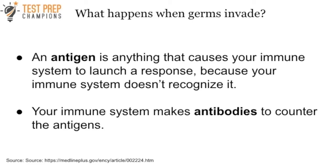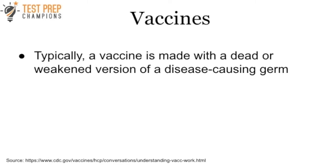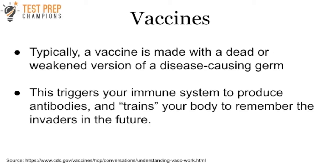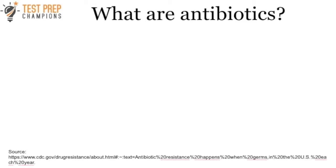Your immune system makes antibodies to counter these antigens, so you're not defenseless. This brings us to vaccines. Typically a vaccine is made with a dead or weakened version of a disease-causing germ. This triggers your immune system to produce antibodies and essentially trains your body to remember the invaders in the future — that's how a vaccine works.